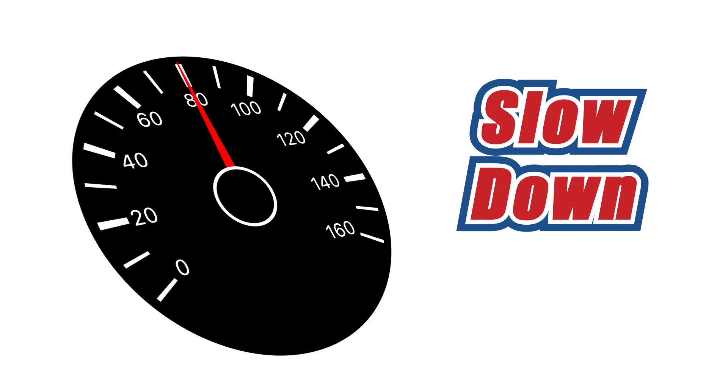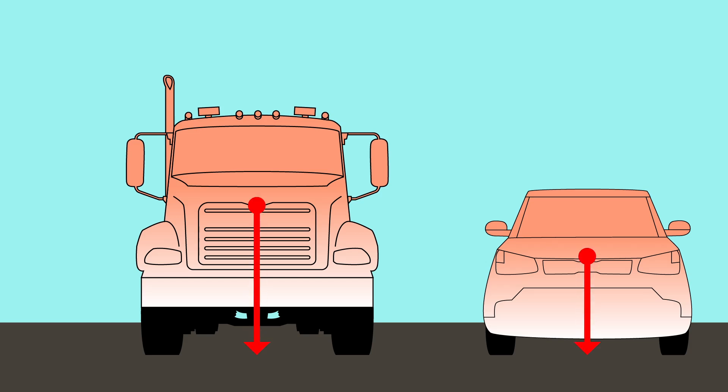To lessen the force of the pull as you turn, slow down to compensate for the vehicle's height and weight. Vehicles with a higher center of gravity will be less stable when rounding a sharp curve.